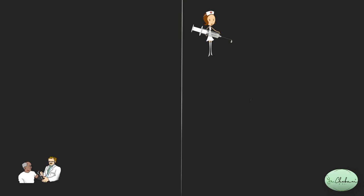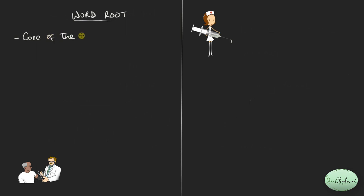Let us discuss the word elements in more detail. The first one we'll start with is the word root. The word root is the fundamental part of the word, or the fundamental part of the term. It's the core of the term and it gives it meaning — this is the core of the medical term which conveys meaning.